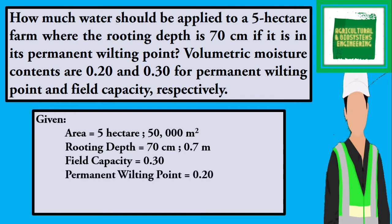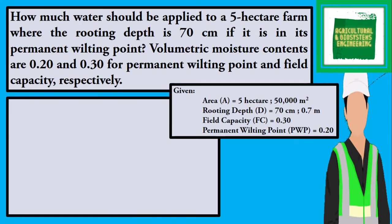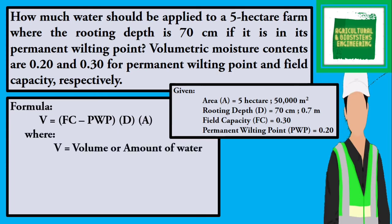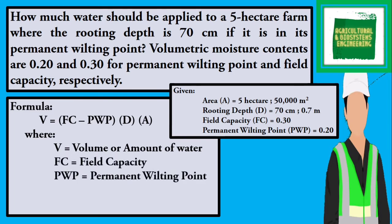The required in the problem is the amount of water or the volume of water. The formula that we are going to use is V equals the difference of FC minus PWP, times D, multiplied by A. Where V is the volume or amount of water, FC is the field capacity, PWP is the permanent wilting point, D is the rooting depth, and A is the area.